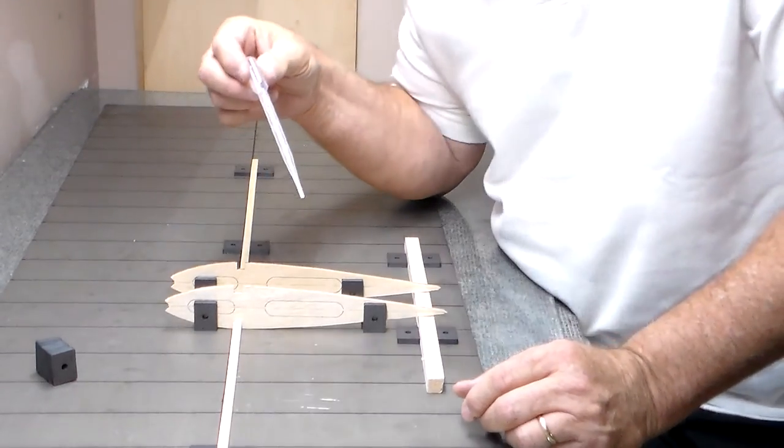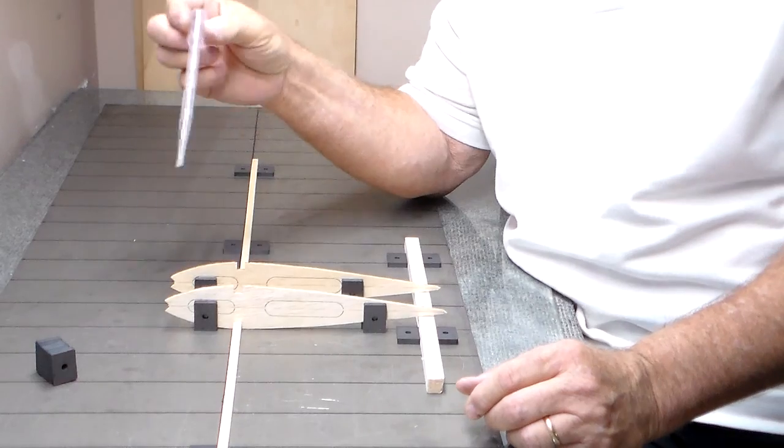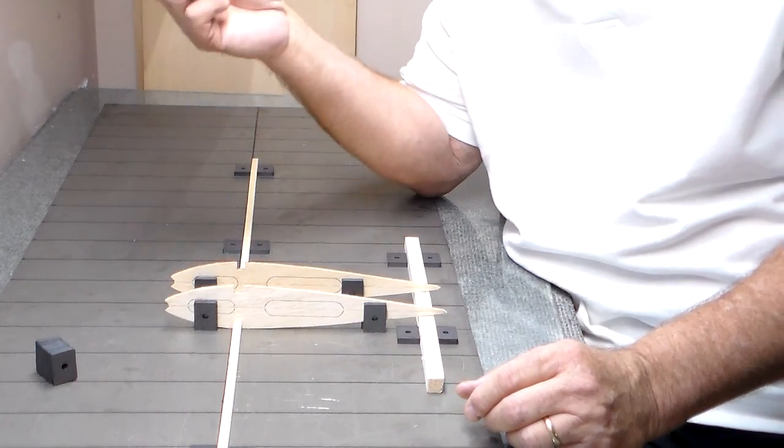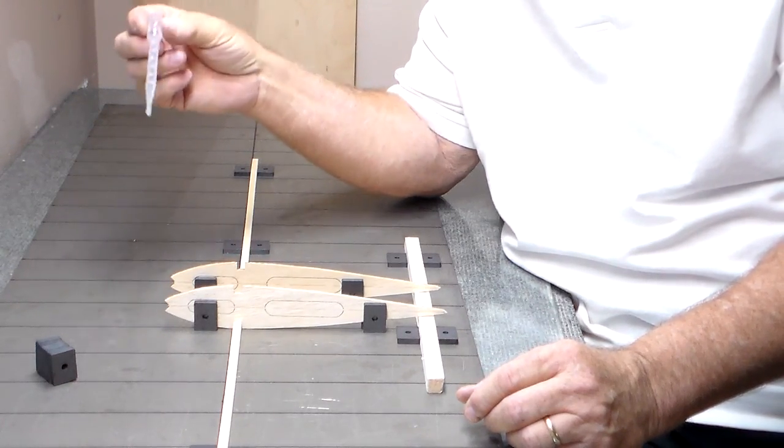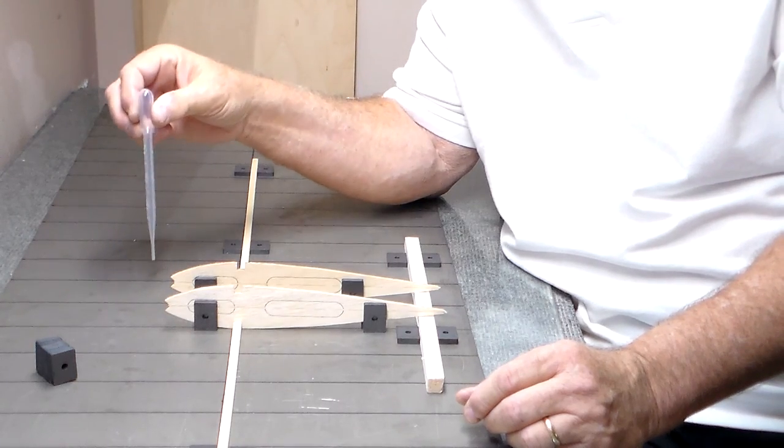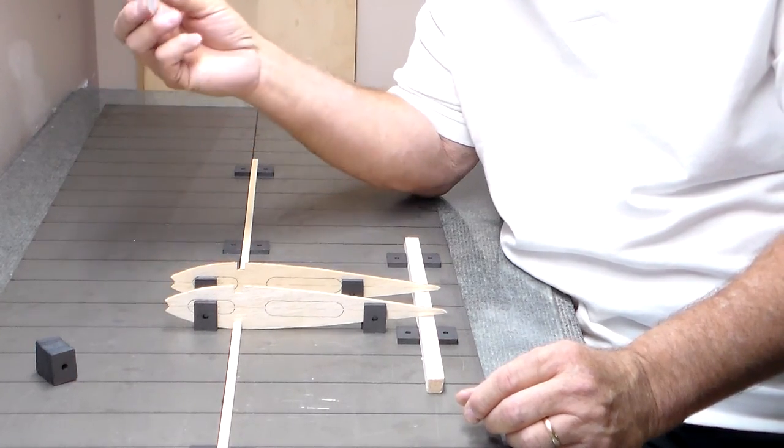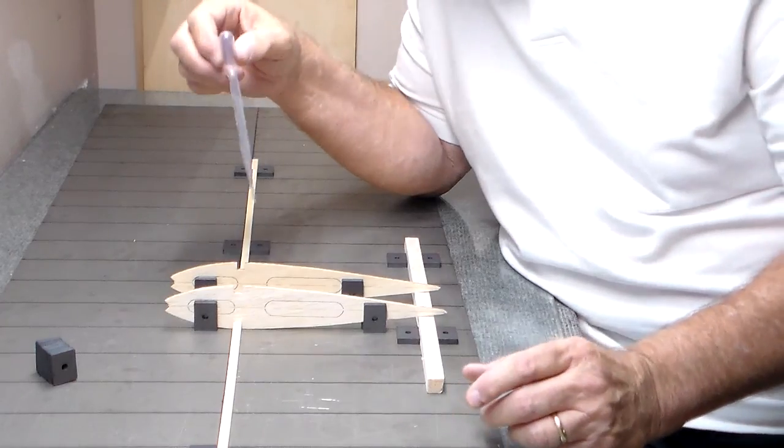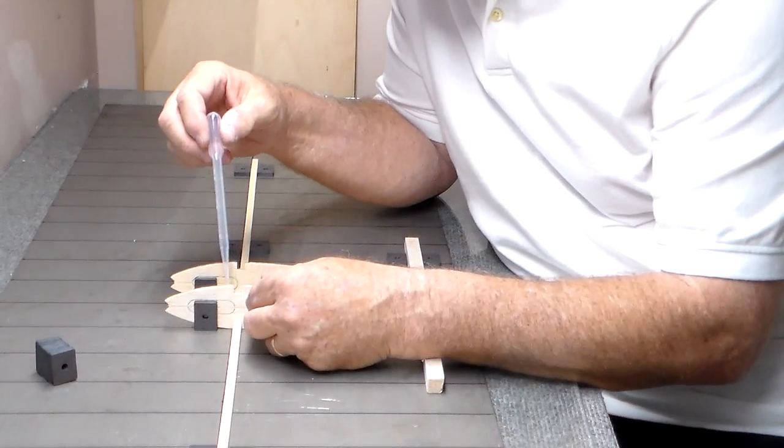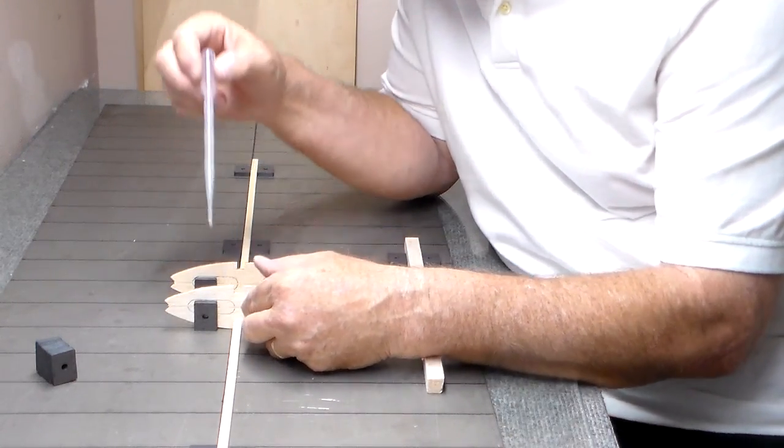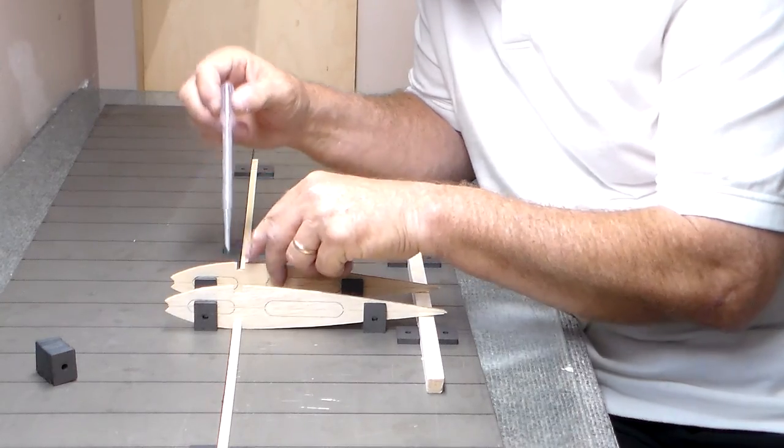You can stick them in and I forgot exactly what you call these things. There's a name for them and I'm getting old, I can't remember stuff. But you drop it into your thin CA, you get a little bit up in here and you want to go along where the ribs meet the spar and just put a tiny drop, just a tiny drop. That's all you need.